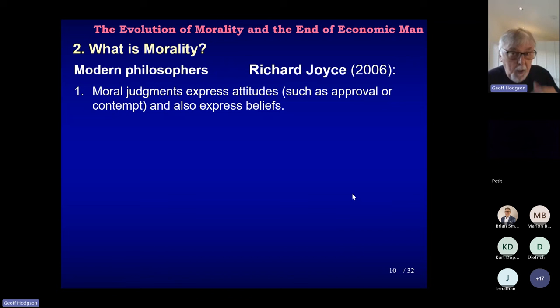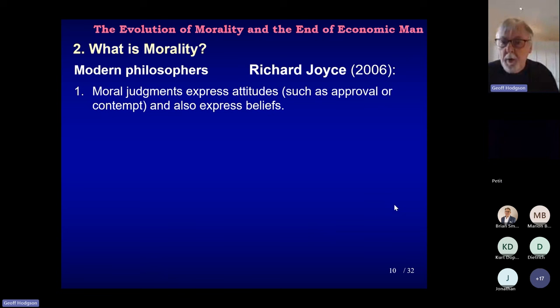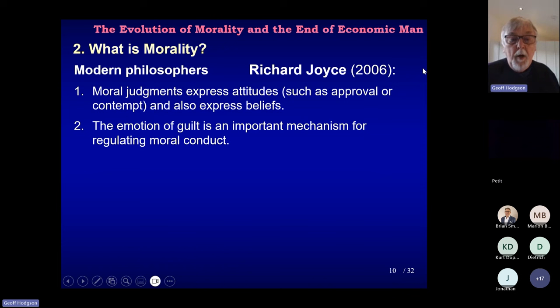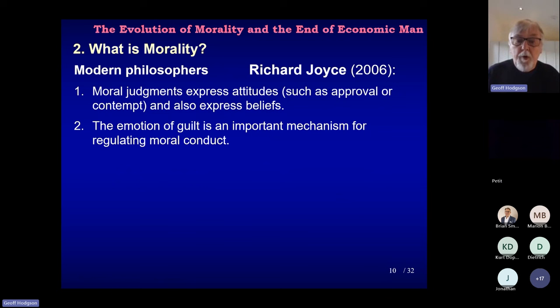I think an even better summary is in a book by Richard Joyce on evolutionary theories of morality, which I thoroughly recommend because it goes into details about Darwinian evolutionary processes in the evolution of human moral belief systems. He lists a number of features of morality: moral judgements express attitude; the emotion of guilt is an important mechanism for regulating moral conduct — there's an emotional part of the story, which we've inherited through culture or genes, that creates feelings of guilt when we break moral codes.